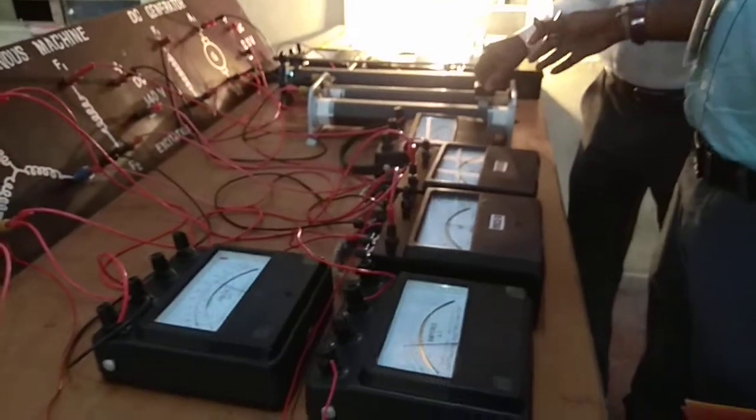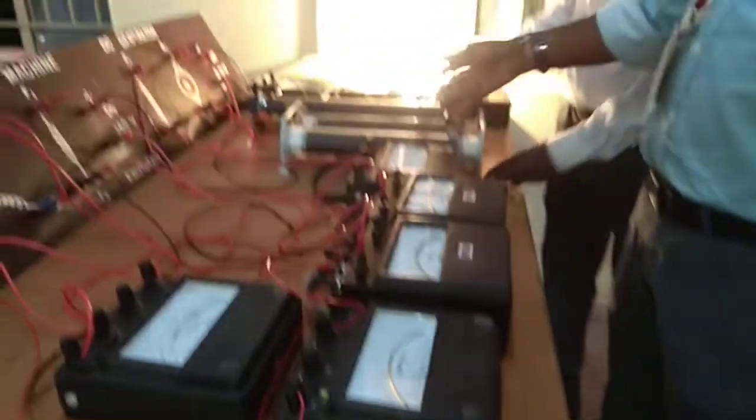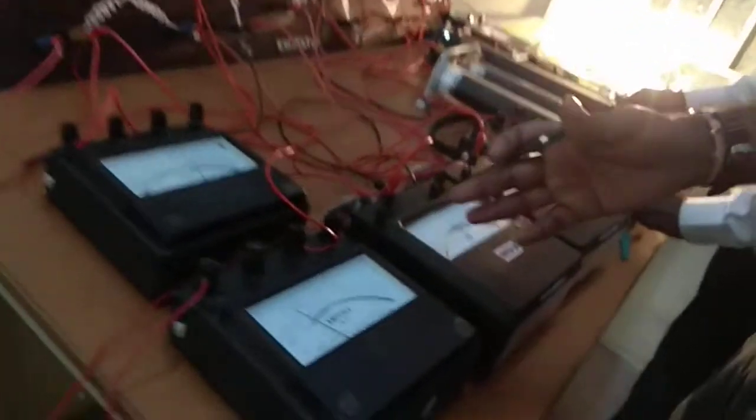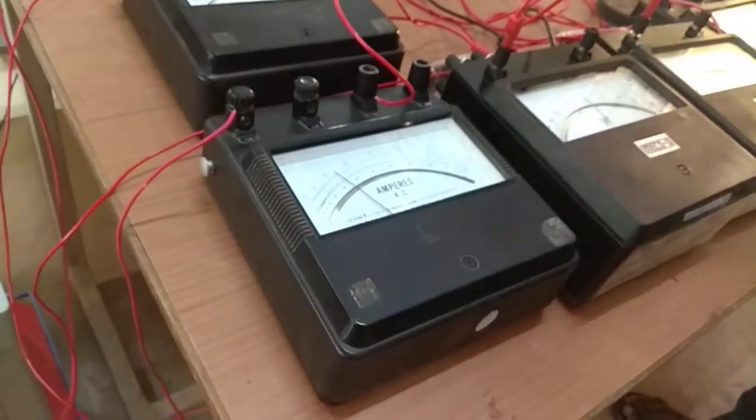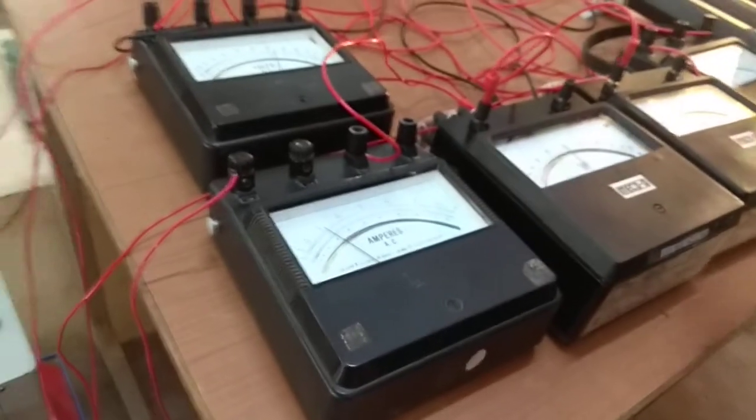Once again the procedure remains the same here. By varying the field rheostat of synchronous machine, we are going to vary the armature current. And for different values of armature current, we are taking the readings of all the meters.